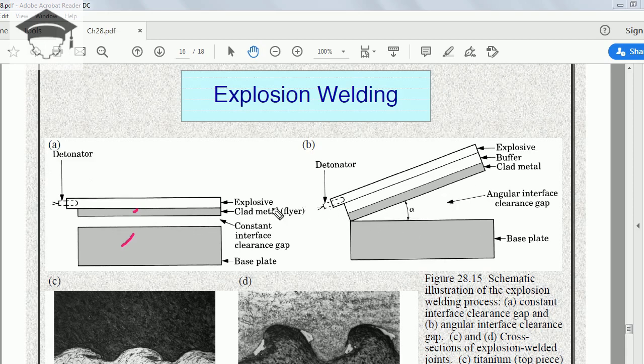In both principles, we prepare a sheet of explosive having the same dimensions as the flyer metal—the metal that has to be welded over the other metal. There have to be two dissimilar metals.